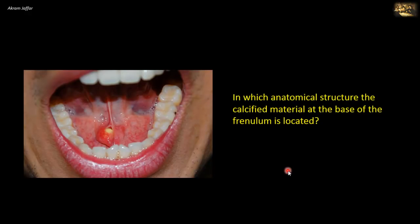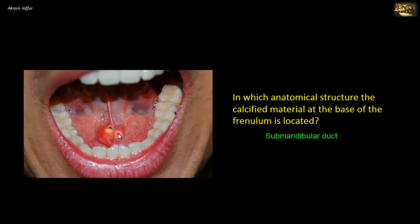In which anatomical structure is the calcified material at the base of the frenulum located? This is a view of the floor of the mouth; you can see the frenulum of the tongue. On either side of the frenulum there is an opening — a punctum — for the submandibular duct, Wharton's duct. The submandibular gland is commonly affected by a calculus, and here the calculus is located at the opening of the submandibular gland, because they open on either side of the frenulum of the tongue.